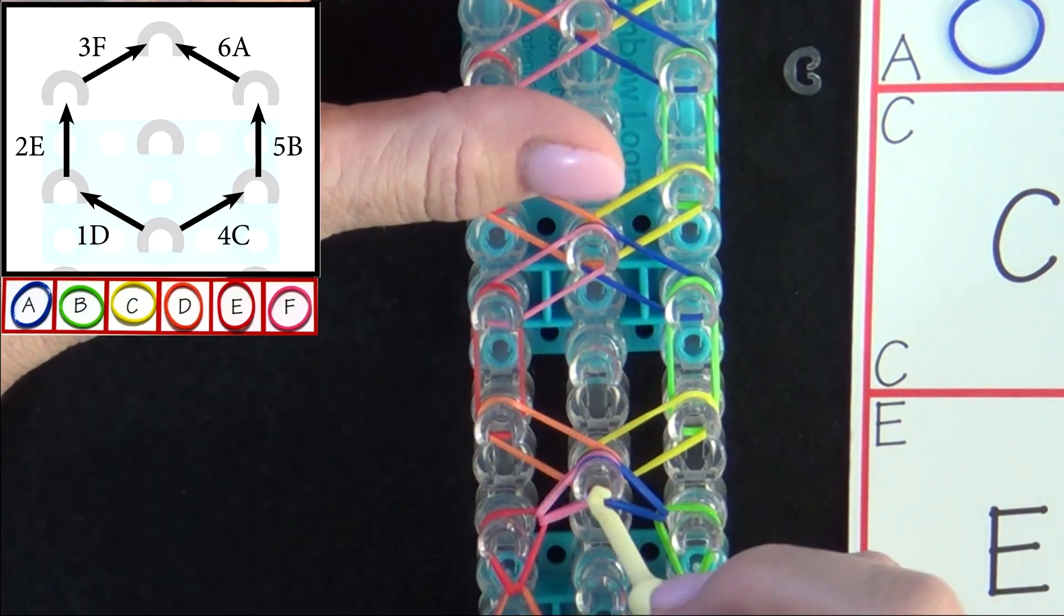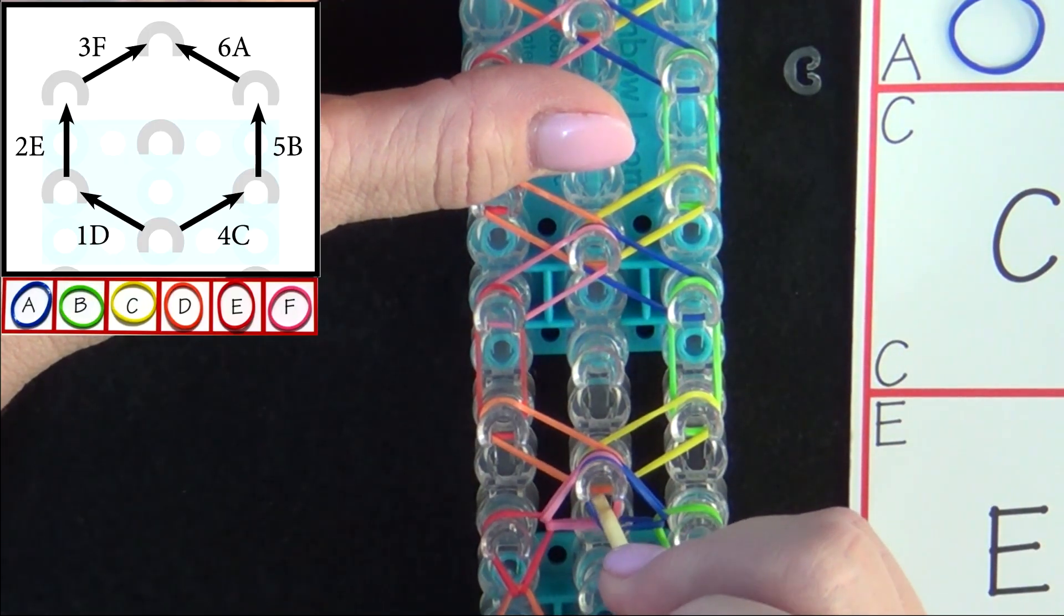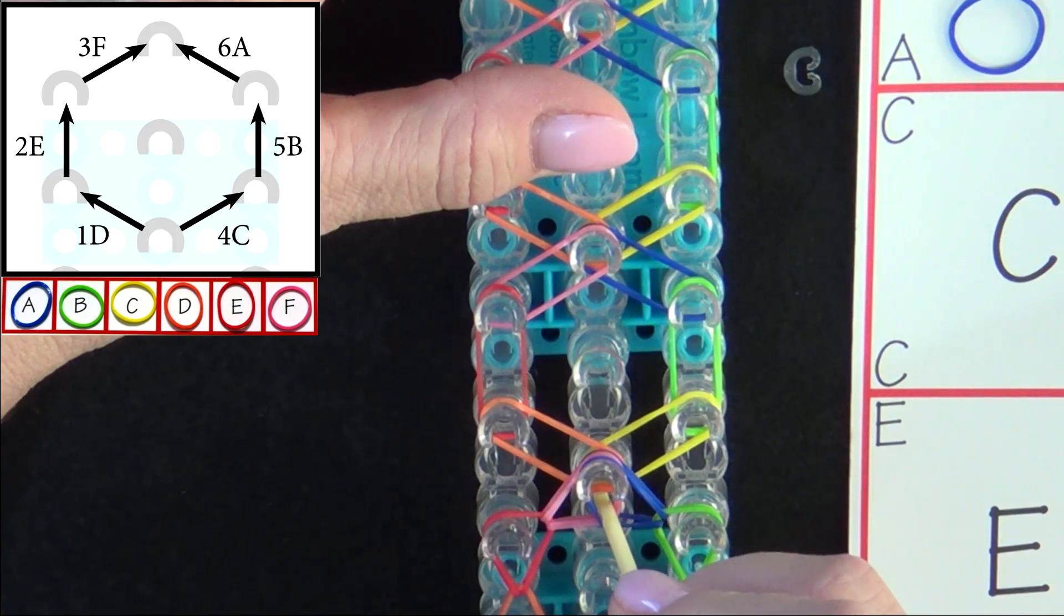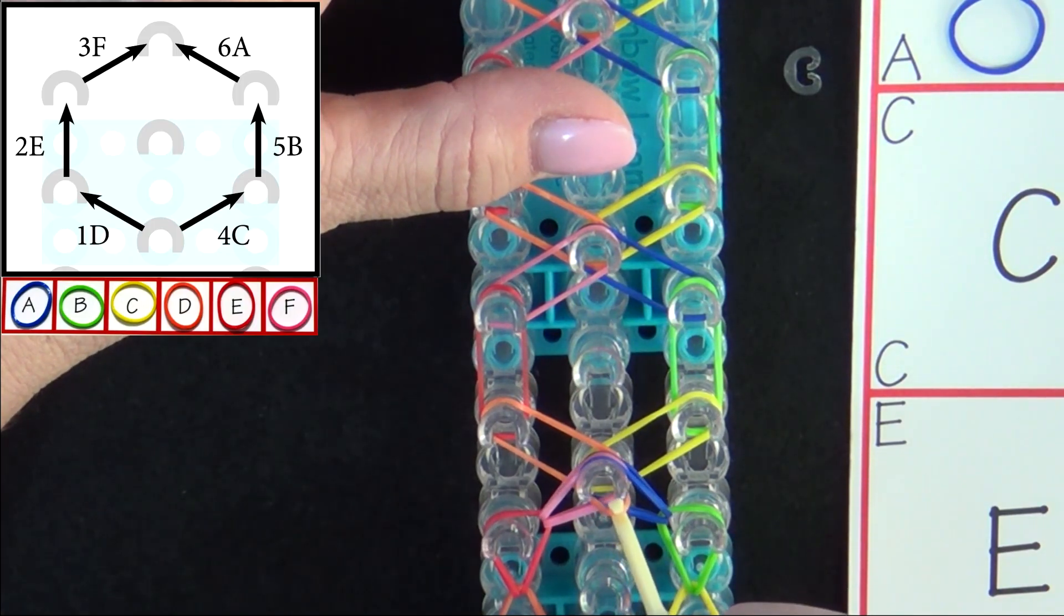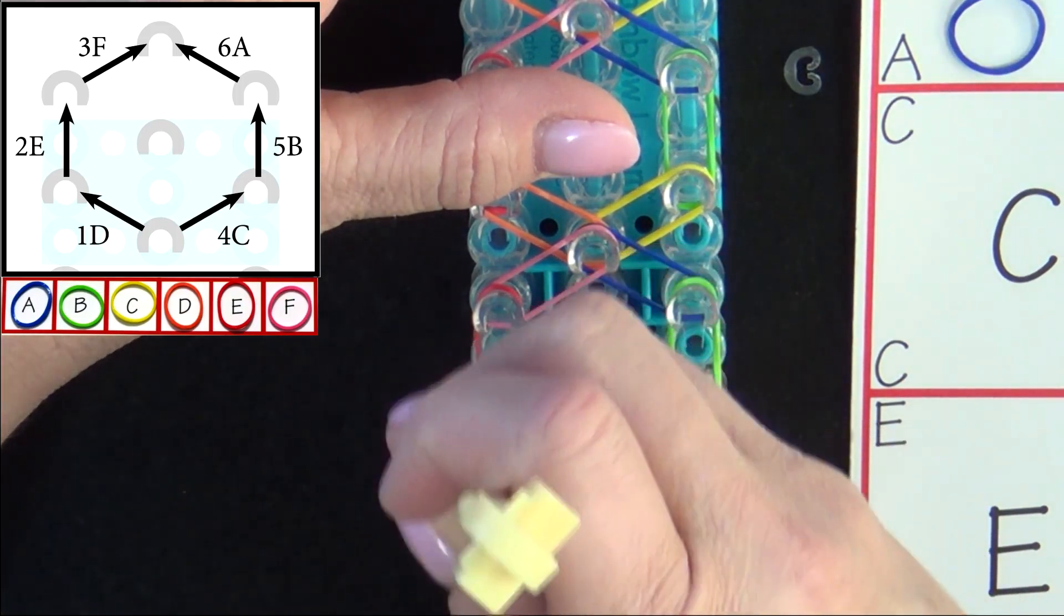We'll loop band 1D. Put all the bands above the D band back. Reach in, grab the D band with your hook and pull it to the left.